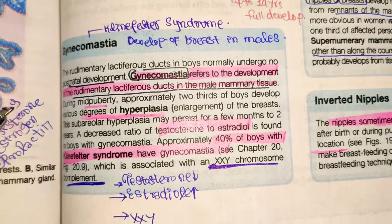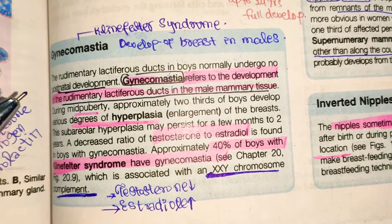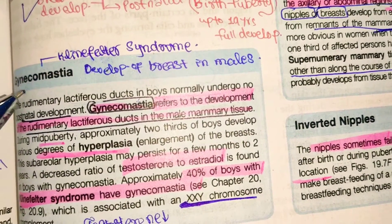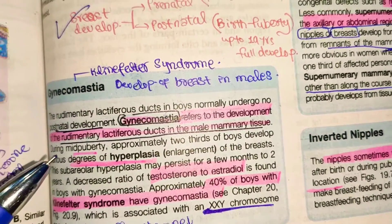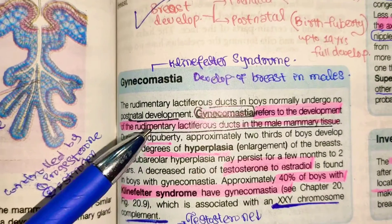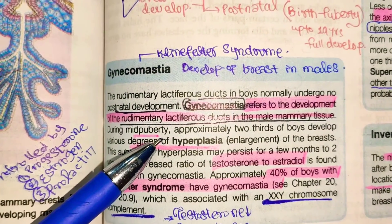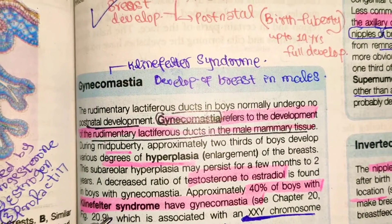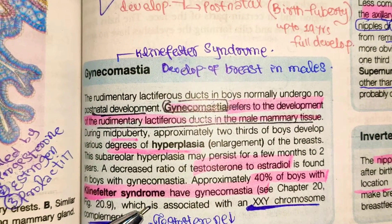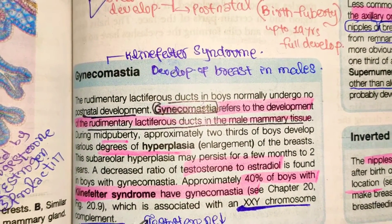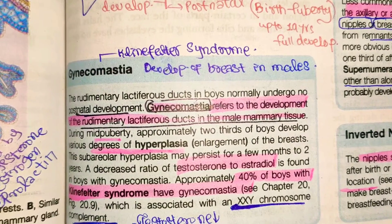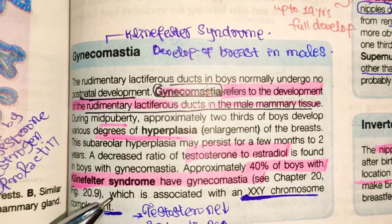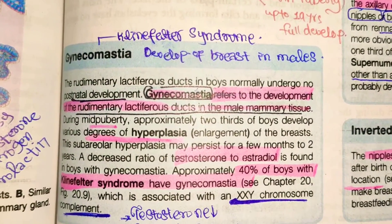Now a brief review of the clinical aspects: development of lactiferous ducts or breast tissue in male mammary glands is called gynecomastia. This is most commonly seen in Klinefelter syndrome, where testosterone is reduced and estradiol levels are altered. Approximately 40% of boys with Klinefelter syndrome have gynecomastia.